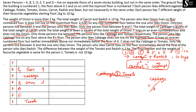C does not like cabbage or tomato, so C is placed on the only remaining floor. Only two persons live between D and the one who likes onion; onion is on floor 4, counting gives D's floor. The person who likes carrot lives immediately above the person who likes radish, so carrot and radish are placed on consecutive floors accordingly.